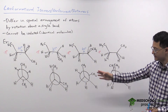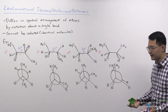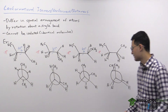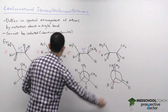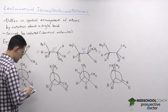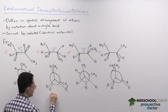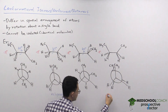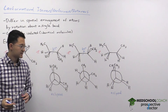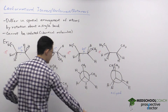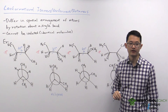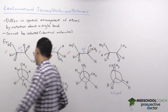Looking at the different conformations drawn, there are clearly some with more steric hindrance than others. In particular, two of the conformations have groups stacked directly on top of each other — these are called eclipsed conformations, and they are higher in energy and less stable. The other two conformations have none of the groups stacked on top of each other; they are staggered. That is the key terminology here.